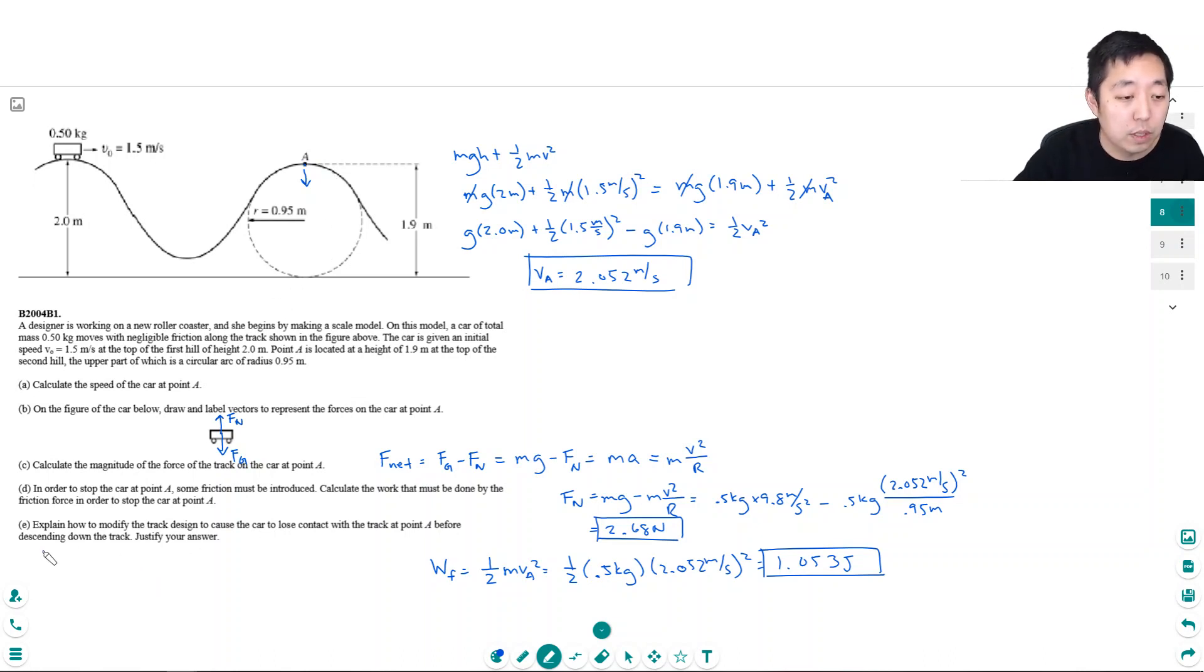So you could lower point A. That would increase vA, and then Fg would be less than m vA squared over r. Like the force of gravity wouldn't be big enough to allow it to stay on the track, so it would actually deviate from the track, which means it's flying off the track.